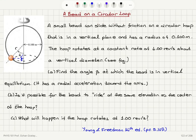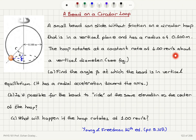A bead on a circular loop. A small bead can slide without friction on a circular hoop that is in a vertical plane and has a radius of 0.1 meters. This is our circular hoop or loop. The hoop rotates at a constant rate of four revolutions per second about a vertical diameter, rotating around this vertical diameter.